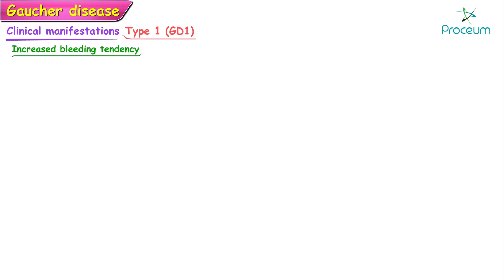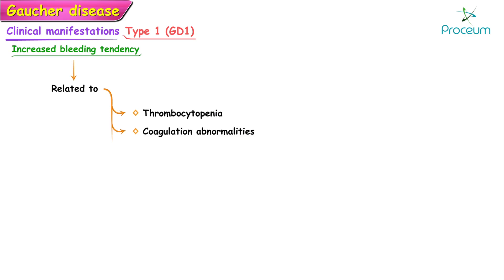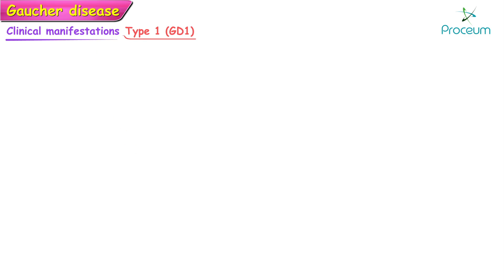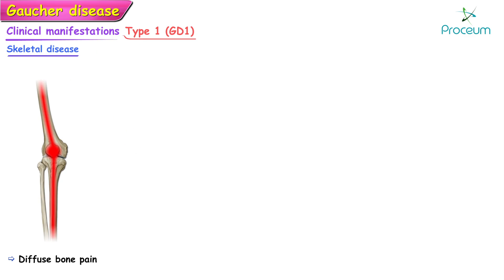Thrombocytopenia results from splenic sequestration and occasionally bone marrow failure. The increased bleeding tendency in patients with Type 1 Gaucher's disease is related to thrombocytopenia, coagulation abnormalities, and defective platelet function.